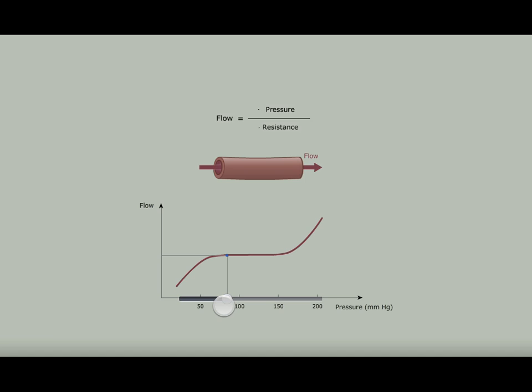The curve shown is representative of vessels with the most effective autoregulation, that is, heart, brain, and kidney vessels. Here are some key points you should get out of the diagram.